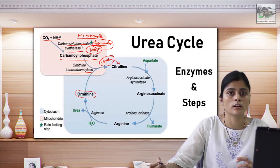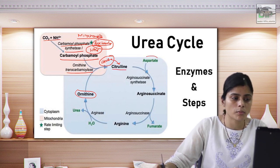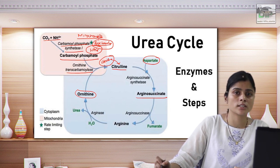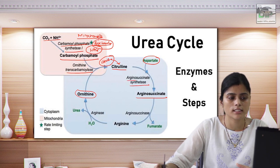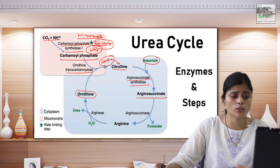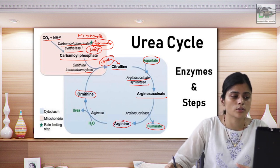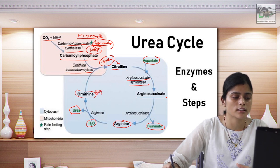Citrulline is transported to the cytosol, where it combines with aspartate to form arginosuccinate — an important intermediate in the urea cycle — by the enzyme arginosuccinate synthetase. Arginosuccinate undergoes further degradation, liberating fumarate and converting to arginine. This arginine undergoes a hydrolysis reaction forming urea, and ornithine is recycled.